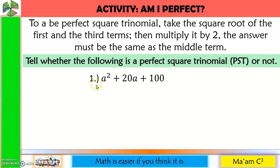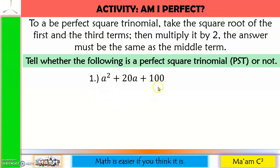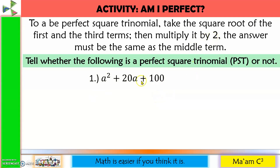Number 1: a squared plus 20a plus 100. Take the square root of the first and third terms: the square root of a squared is a, the square root of 100 is 10. Multiply: a times 10 is 10a, times 2 is 20a — and that is the middle term. Therefore, this is a PST.